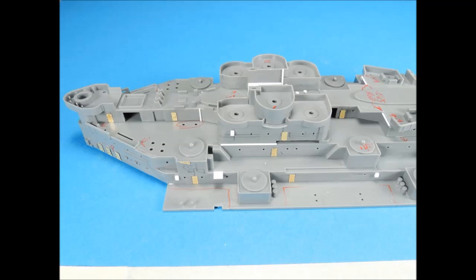This 1 to 350th scale Tamiya Missouri superstructure had several voids and hard to fix areas. So strips of half round and lengths of flat plastic were applied to cover the voids. Once the superstructure is painted and all the detail is added, these subtle additions will not be noticed.